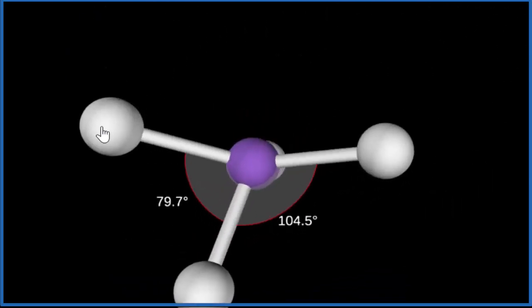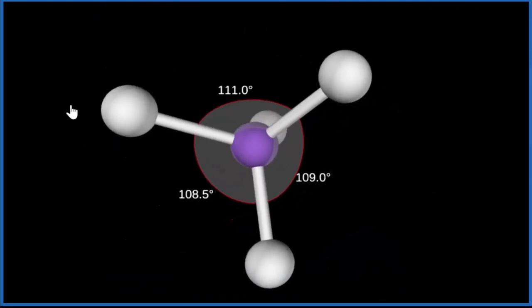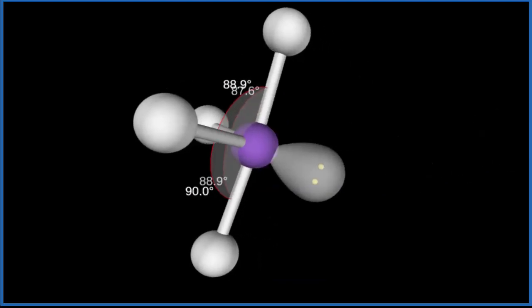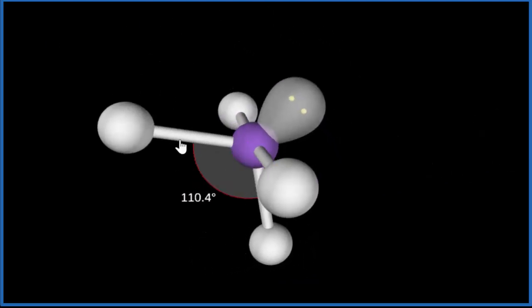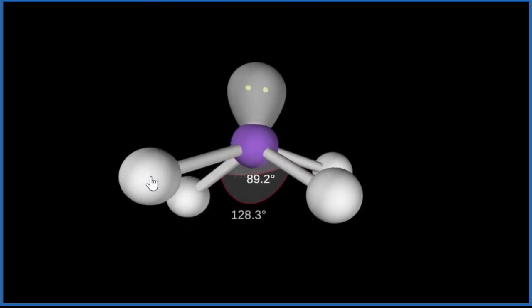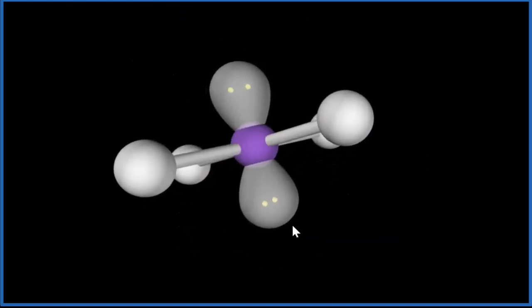They spread out to be as far away from each other as they can, but don't forget about those two lone pairs. They occupy space, and they'll push these fluorine atoms down. So let's add them in. One lone pair, you can see it's pushing everything down, and then when we add the other lone pair, let's get this straight here, that actually goes on the bottom.